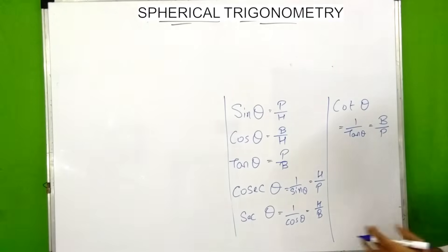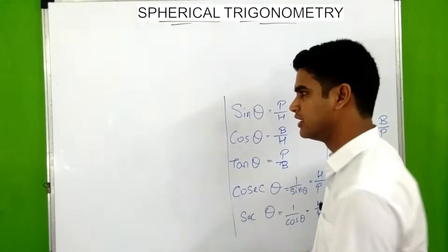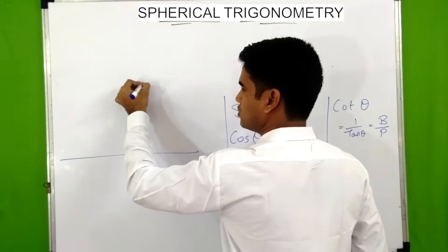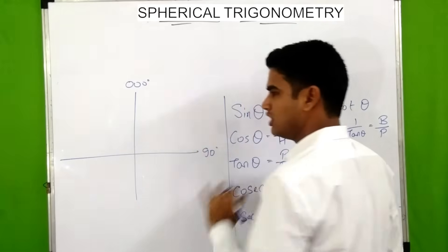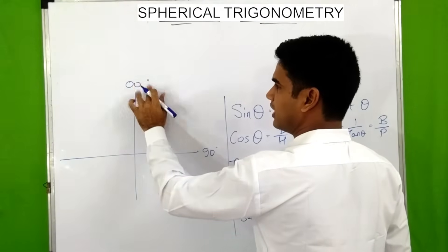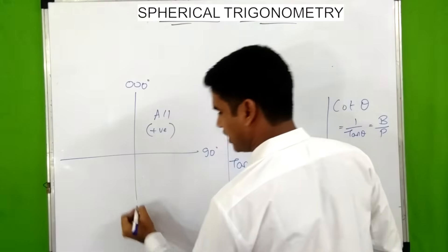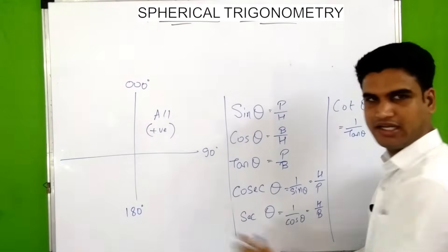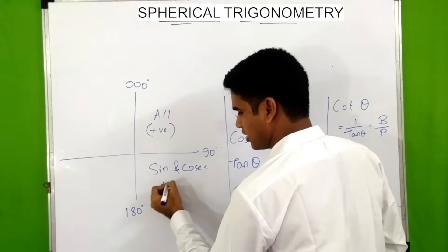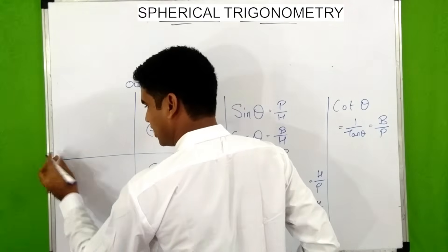We also know the values of trigonometric ratios at different angles from 0 to 360 degrees. From 0 to 90 degrees, all values of trigonometric ratios are positive. From 90 to 180 degrees, the value of sine and therefore cosec is positive and all others are negative. Then from 180 degrees to 270 degrees...